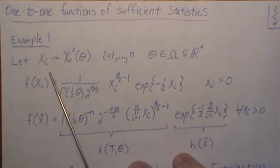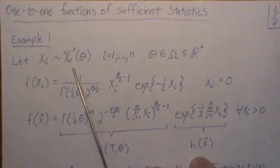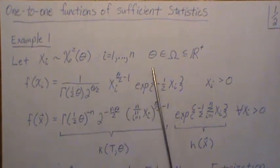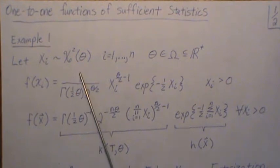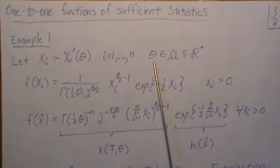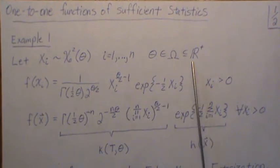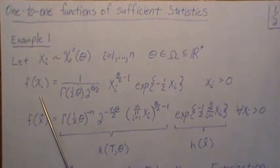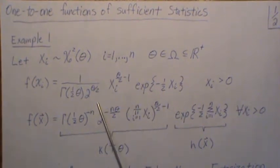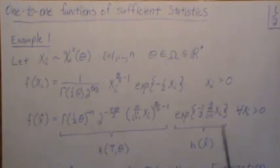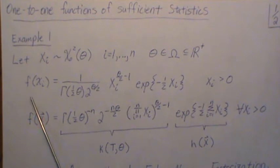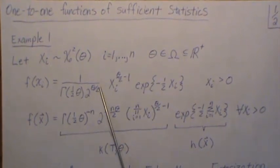Let xi be a chi-square random variable, where i goes from one to n, so we have a sample of size n from a chi-square distribution. Theta lives in the parameter space omega, which is part of the positive real numbers. The density f of xi is a standard chi-square distribution, and xi is positive.